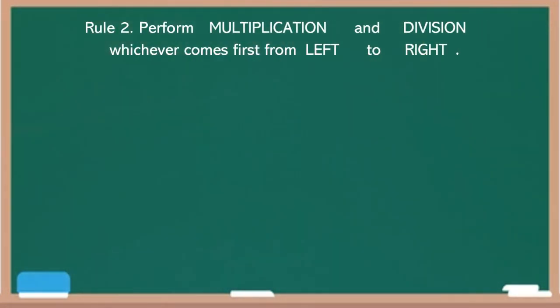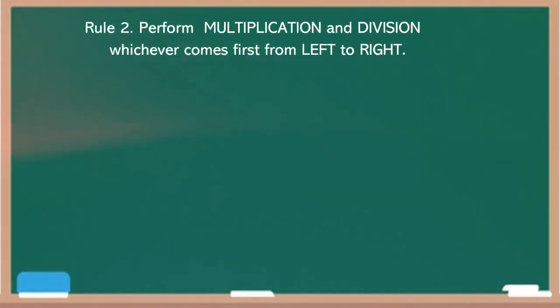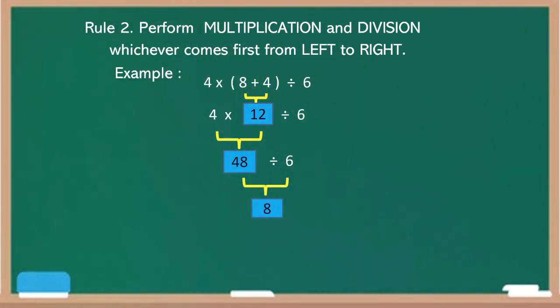Rule number 2, perform multiplication and division, whichever comes first from left to right. Let's have an example: 4 times parenthesis 8 plus 4, divided by 6. Since it has a parenthesis, we'll perform first the operation inside the parenthesis before we can go on to the next operation. So 8 plus 4, you have 12. Bring down 4 and 6. Since multiplication comes first, we'll multiply first 4 and 12 equals 48 divided by 6. The final answer is 8.